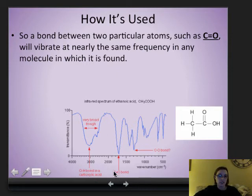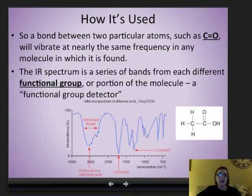For example, triple bonds are much stronger, so it takes more energy for those to vibrate. Or single bonds are weaker, so it doesn't take as much for them to vibrate. Because the bond shows up at about the same frequency in any molecule, the IR spectrum can actually be used as a functional group detector.